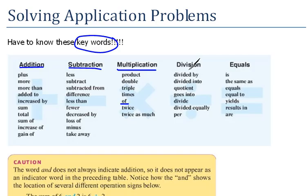We also have a list for division. Here we have divided by, quotient, divide equally, and per. That's a nice word. Whenever you hear things like miles per hour, that's a division problem.